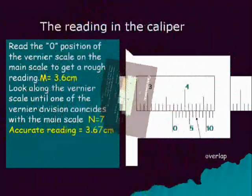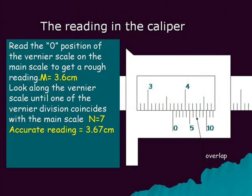Here we have another example where Vernier zero is between 3.6 and 3.7, therefore the main scale reading, M, is 3.6 cm. Here, the 7th line of the Vernier is coinciding, therefore the Vernier coincidence is 7. Therefore, the accurate reading is 3.67 cm.